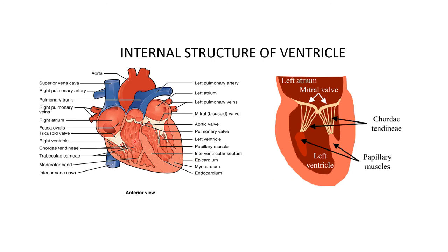The right ventricle gives an opening to the pulmonary artery, which carries deoxygenated blood to the lungs. The left ventricle gives rise to the aorta, which carries oxygenated blood pumped throughout the body. The pulmonary artery and pulmonary veins are guarded by valves known as semilunar valves.